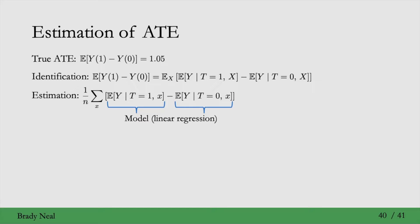When we take an empirical mean over X, so over our data, and we fit a model to our data, we can get an actual estimate. And that specific estimate we get, in this case, is 0.85.